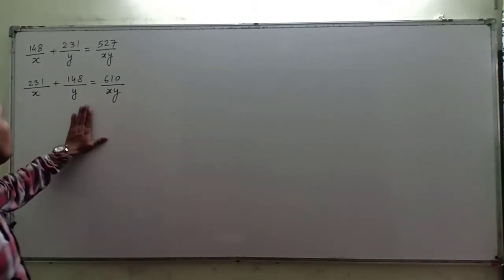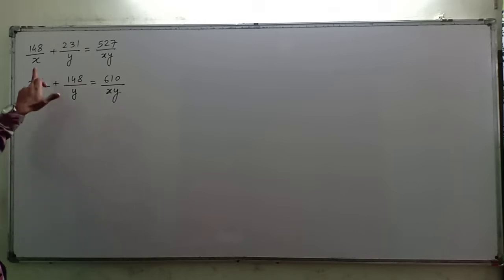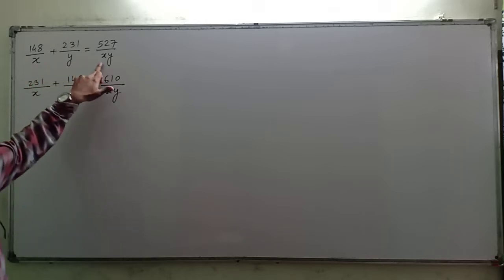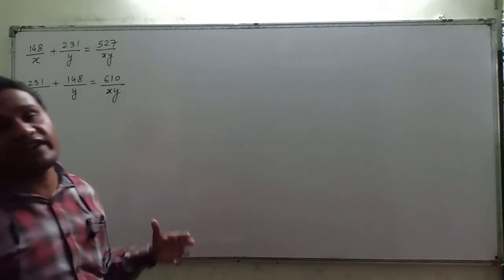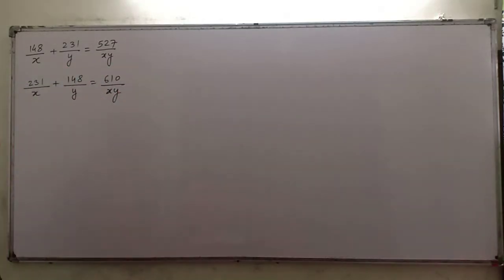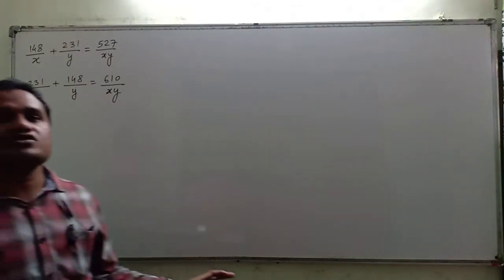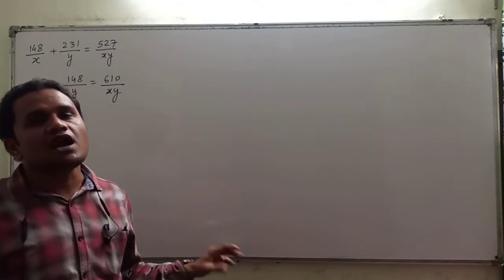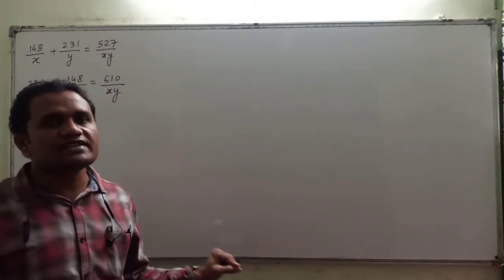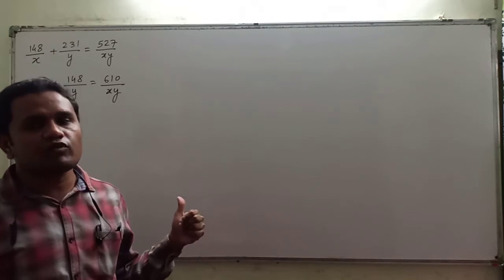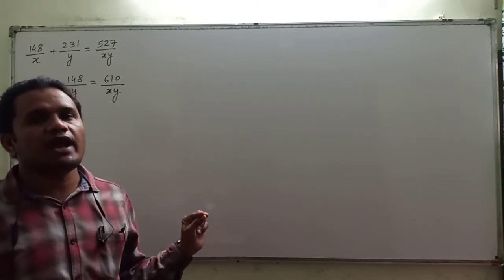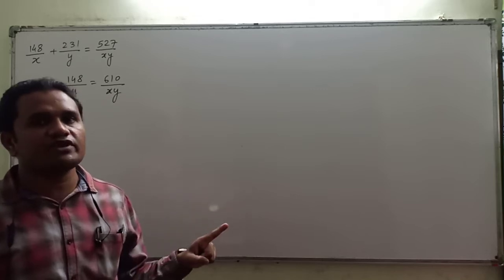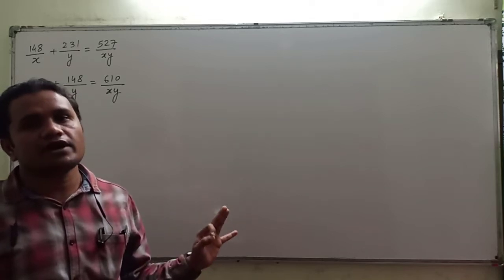This is a new type of problem. As you can see, the denominators are x and y, and the fraction on the right-hand side has denominator x·y. Now whenever this type of question comes, what will be our strategy? Whenever you see this type of problem, what you have to do is multiply each and every term of every equation by xy.